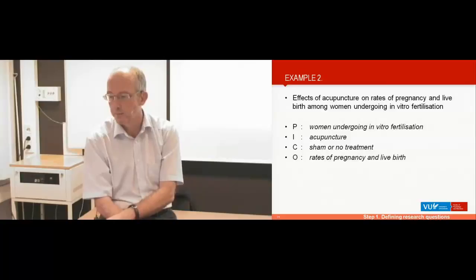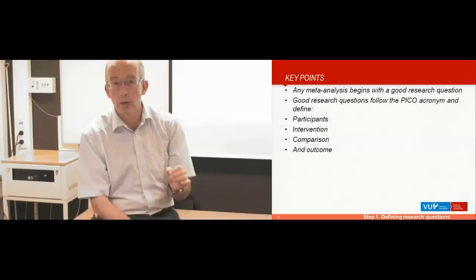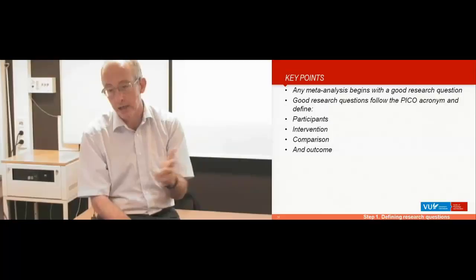So this is the first thing you have to do when you do a meta-analysis. It begins with a good research question, and all good research questions for meta-analysis use the PICO acronym. You have to define the participants, the intervention, the comparator where you compare the intervention with, and the outcome you're interested in.